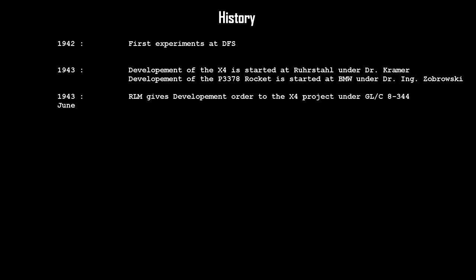Development for the X4's power plant was started under Dr. Zuborowski at BMW in January 1943 as Project P3378. Project P3378 received the RLM code 109 548. The BMW design used a hypergolic mixture of R-Stoff and SV-Stoff, which made the fueling process very dangerous. Thus, it was decided to replace it as soon as possible with the Schmidding 109-603 solid fuel rocket motor.